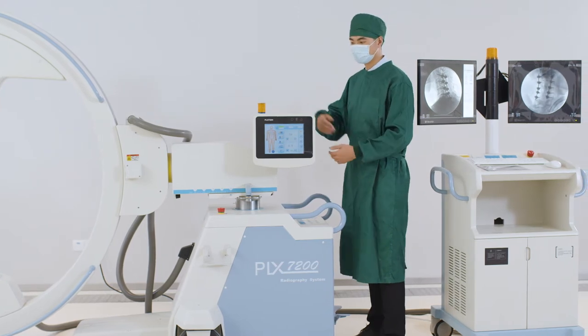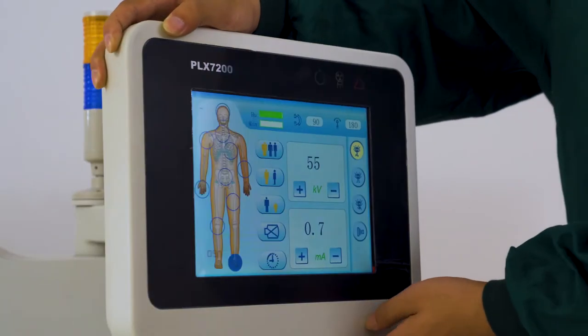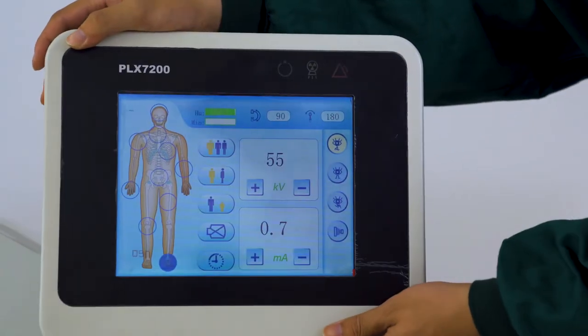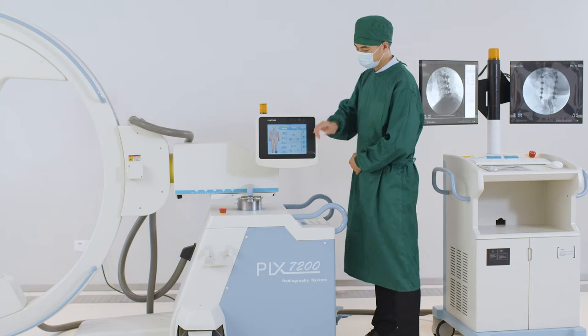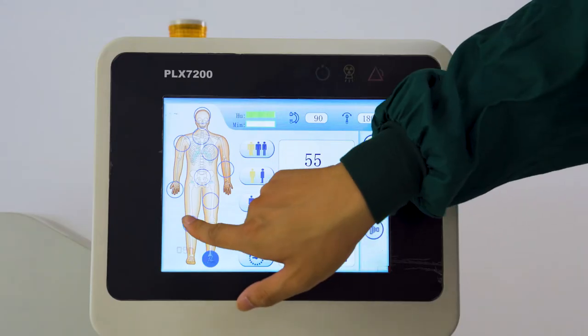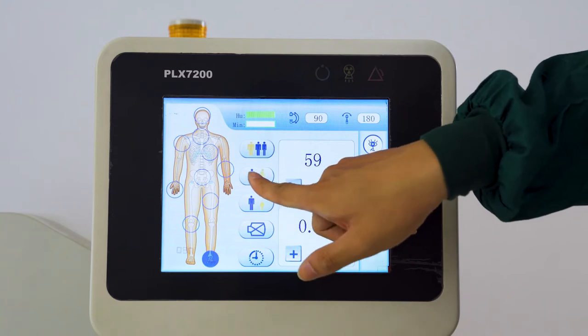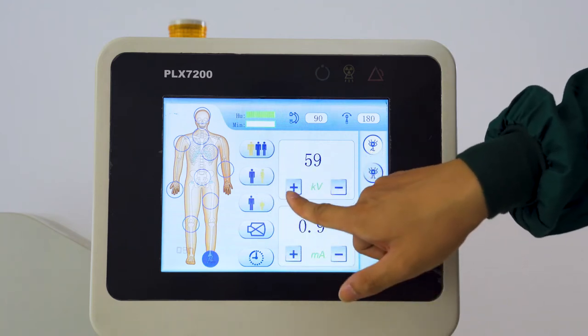The LCD touchscreen can be rotated freely on both sides of the mainframe, with accurate APR parameter settings, smart and fast operation, convenient for operating mode selection, parameter adjustment, and other operations.